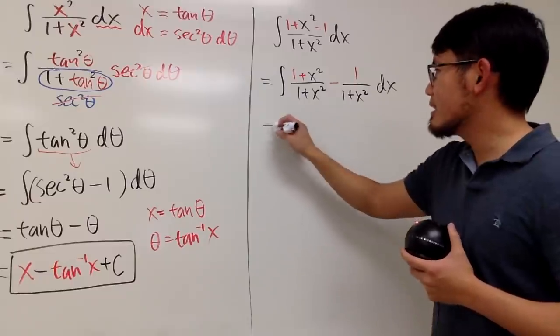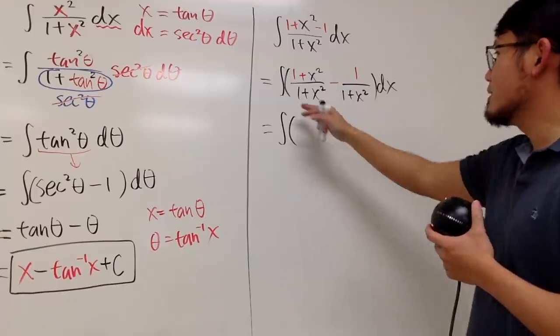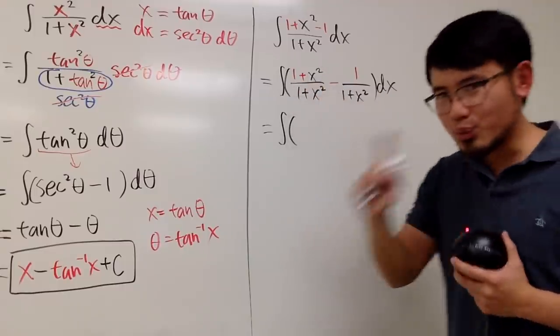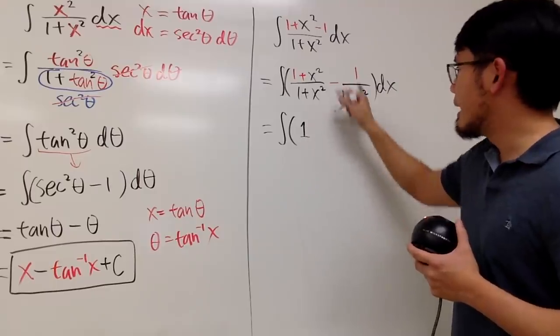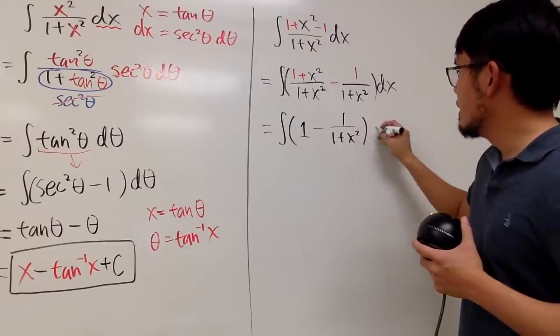And again, this right here is just integral. And some people will let me put parentheses. It doesn't matter, in my opinion. But anyway, this right here is just 1, the 1 that we like.